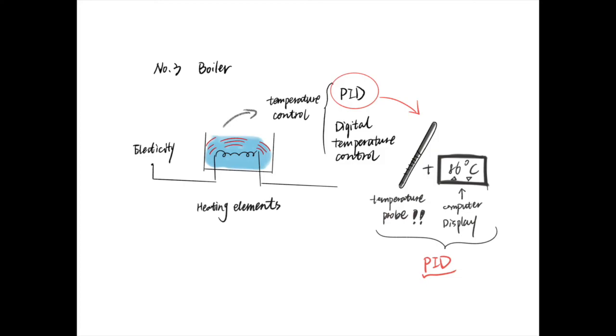A digital temperature control functions in a similar way as the PID. The only differences between PID and digital temperature control are that PID offers more control and information through a digital display and that users can adjust the algorithm on a PID, but cannot with digital temperature control.